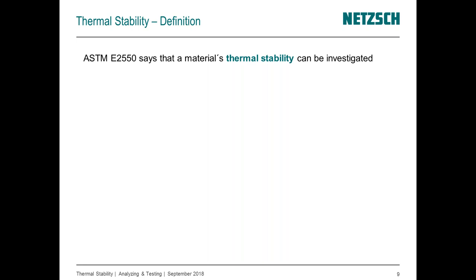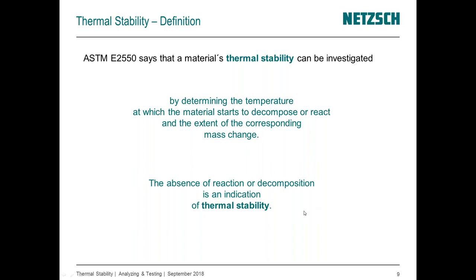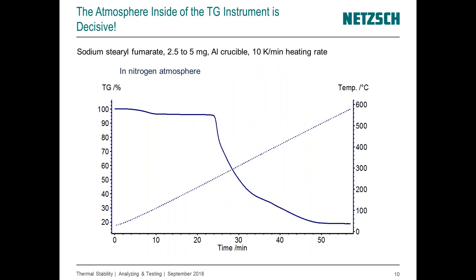Regarding thermal stability, this is also defined in an ASTM standard, which states that thermal stability is given by the temperature up to which the material is not decomposing. It also refers to the related mass change, but essentially stability is the temperature until the material is not changing its composition and not evolving gas. That is mainly what we measure with a thermogravimetric device — whether the sample remains inside the crucible or starts decomposing, producing gases that are purged out, causing weight loss.